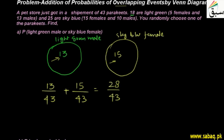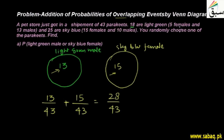Now let's go to the next part: the probability of male or sky blue. If we talk about male, we can add them: 13 males in the light green group and 10 males in the sky blue group, giving us 23 males total.